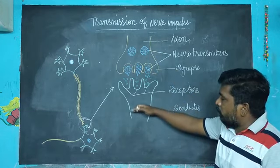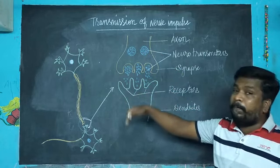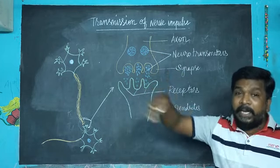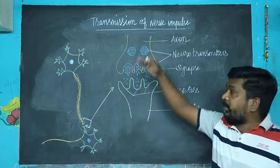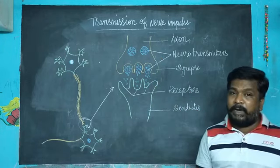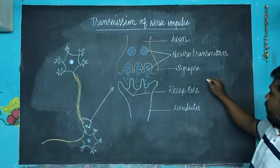The impulses will be transferred from one neuron to another. The same way the impulse will reach the brain through the same pathway. That is the transmission of nerve impulse. Next we can learn about the neurotransmitters.